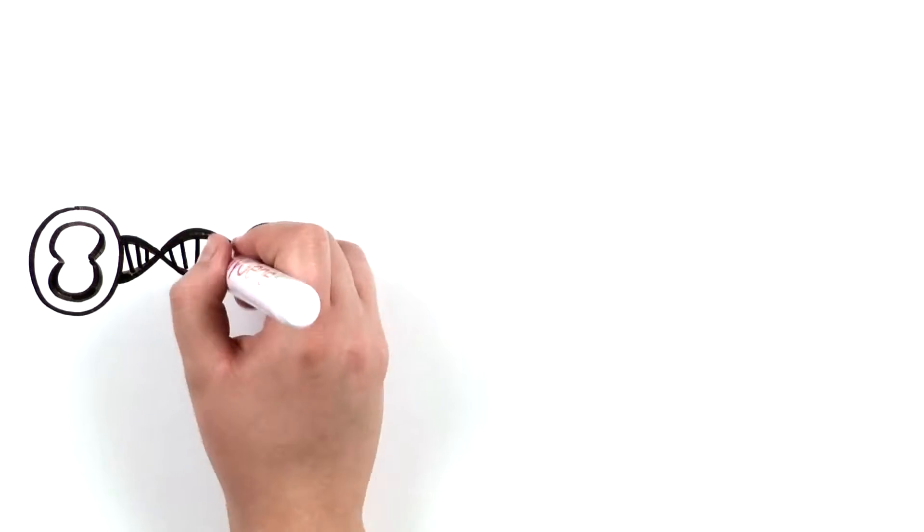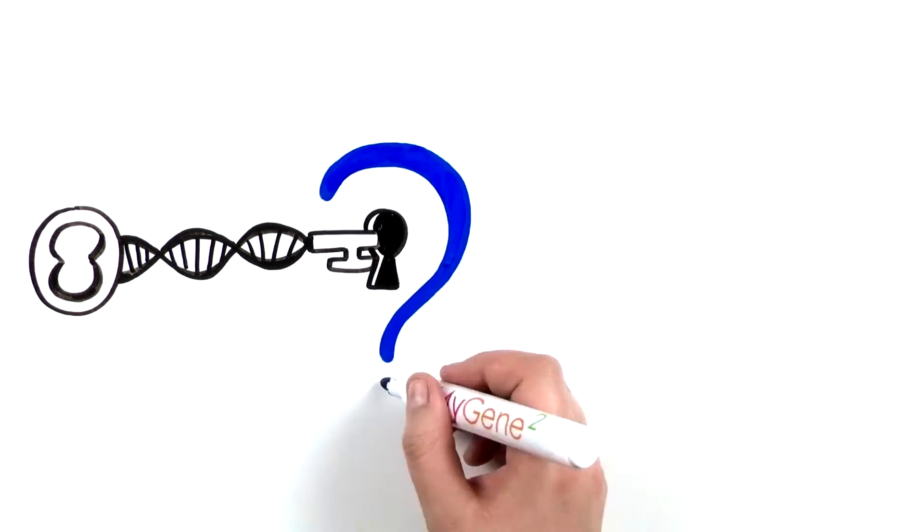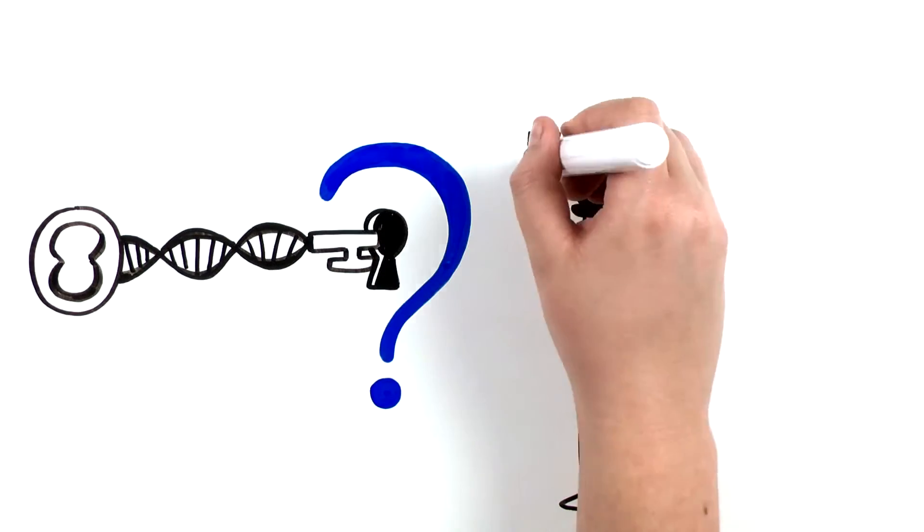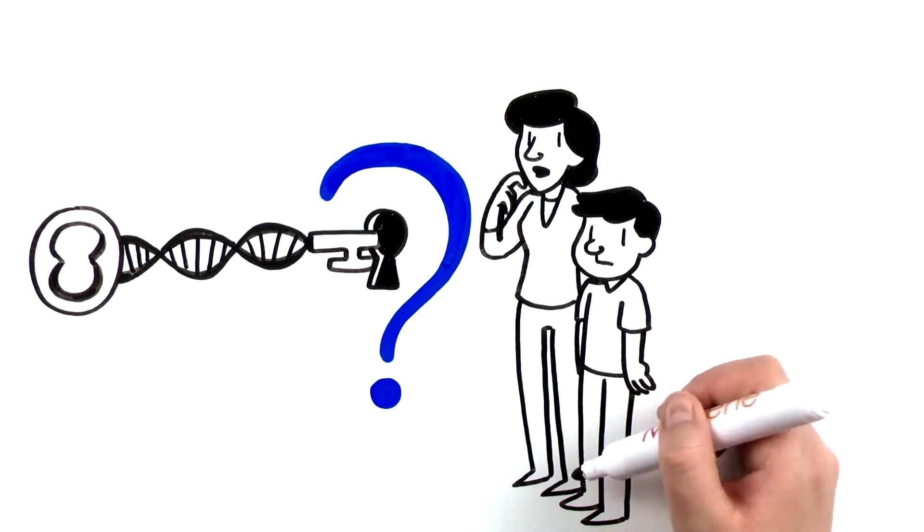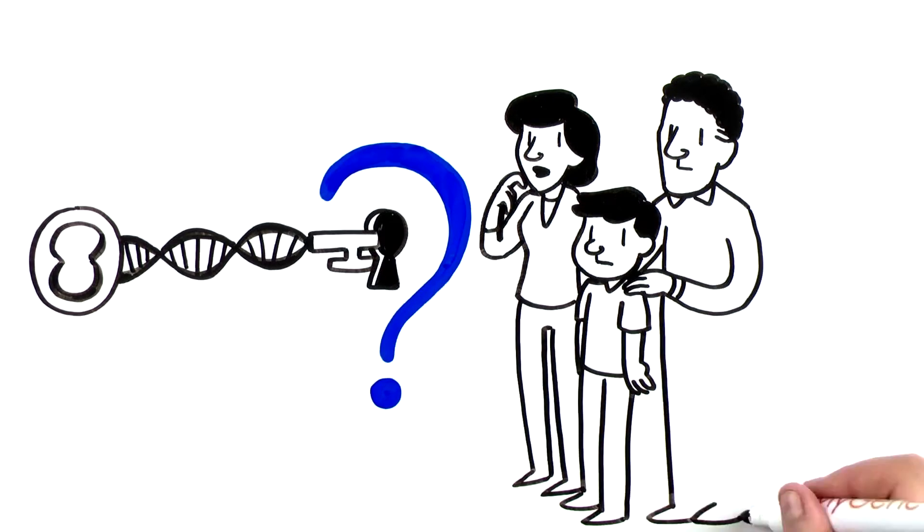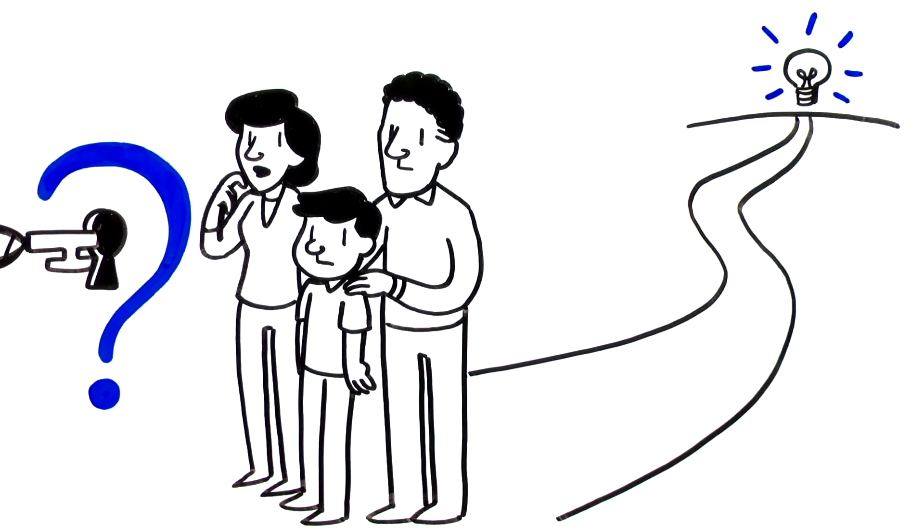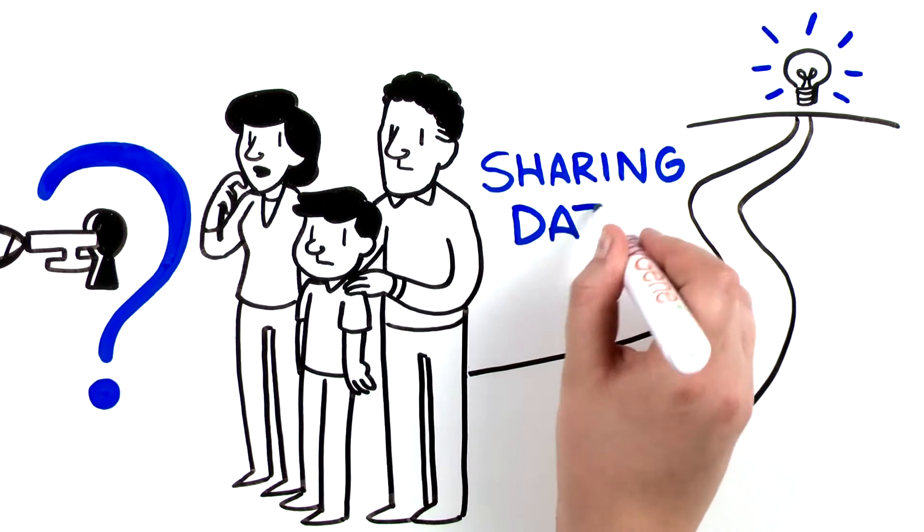What's the key to discovering the gene that unlocks the mystery of a rare condition? Or understanding the relationships between genes and rare diseases? Or helping families of a child with a rare disease anticipate the path of their child's condition? The key is sharing data.